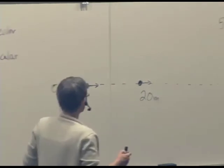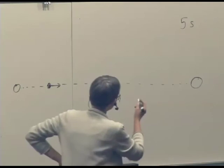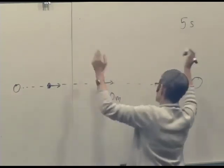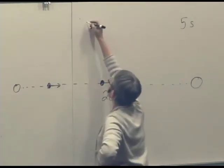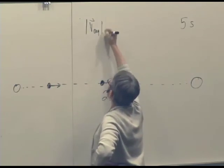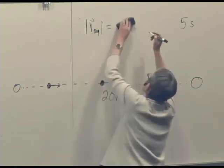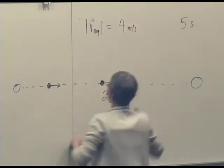We could say, well, its average speed was 20 meters divided by 5 seconds. So its average speed would be 20 meters, 5 seconds. It would be 4 meters per second.